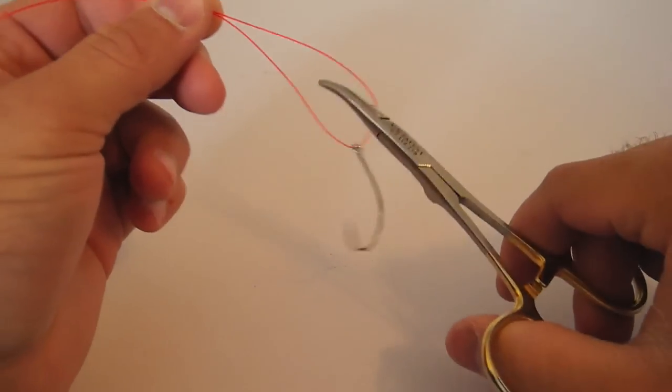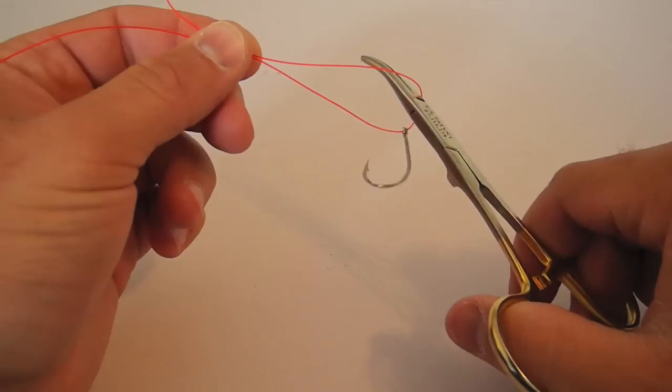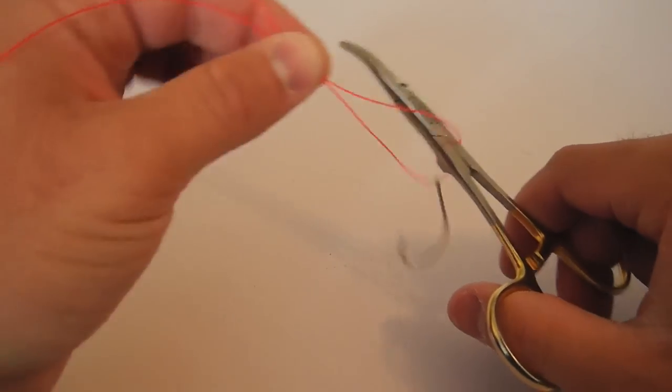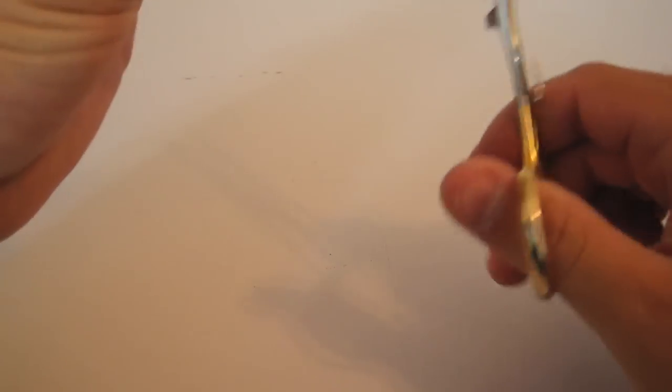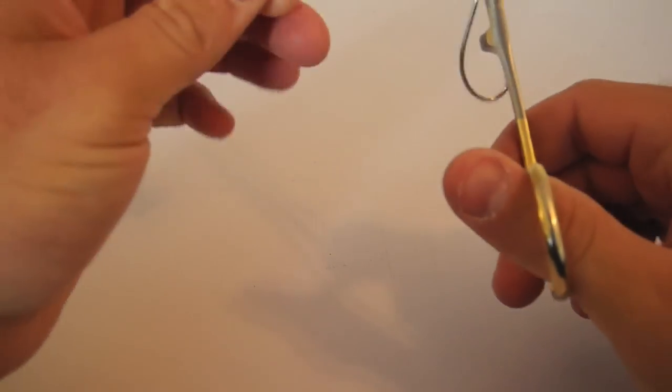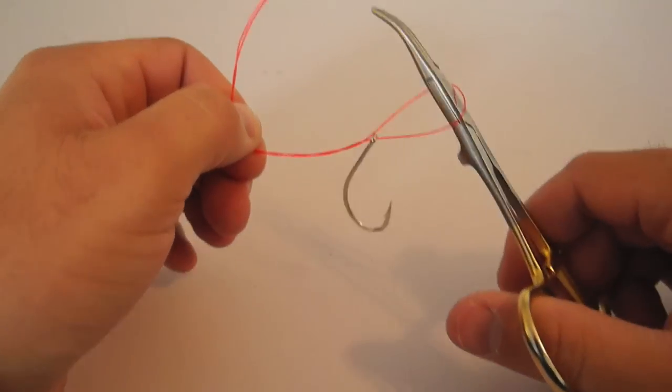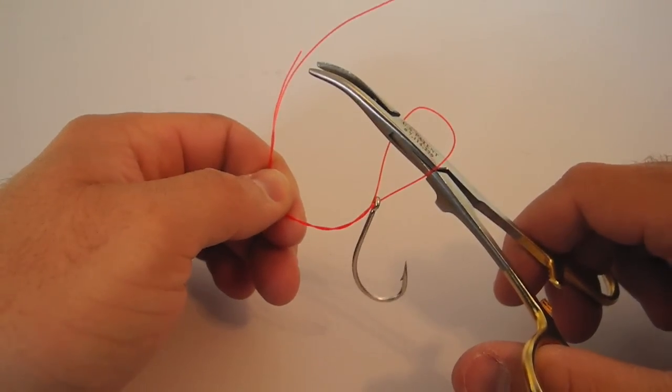Grab your favorite pair of hemostats and put it through the loop that I just made. Don't grab the hook, just through the loop. And you're going to twist five times, the standard twist that you would do with any clinch knot.